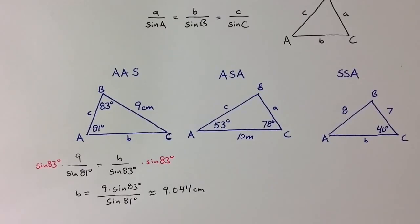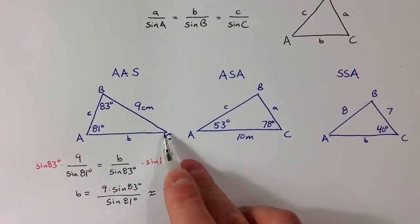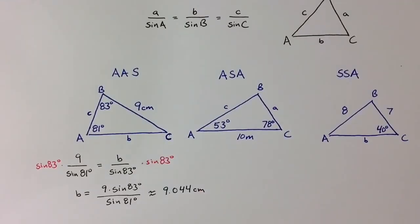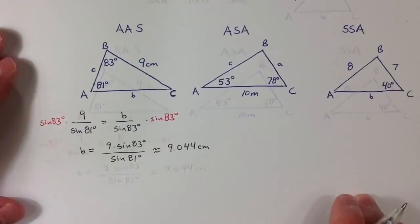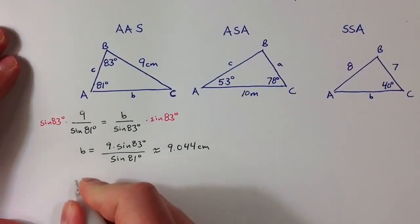In order to find the side length for c, we need to first figure out the angle measure for c. But that's not too hard to do, because we know that the three angles of a triangle have to add up to 180 degrees.